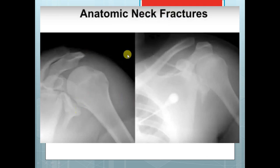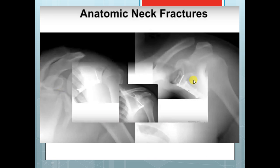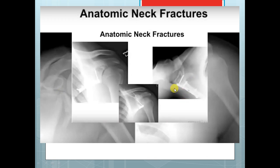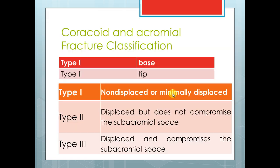This is the zoomed view of the anatomical neck fracture — the fracture extends lateral to the coracoid. This is the usual fixation for this type of fracture using a one-third tubular plate. It is a very rare type of fracture.